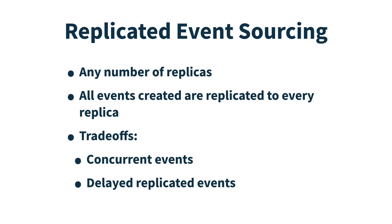This is the trade-off we make when using event source behaviors with cluster sharding. When failure cases happen — crashes or network partitions — it takes some time to move those entities and guarantee we don't have multiple instances running. Replicated event sourcing makes the opposite trade-off: we remove the single writer principle and develop our business logic assuming that events can happen concurrently. The machinery of replicated event sourcing handles the replication between various replicas, and if we store an event on one replica it will be replicated to all other replicas. Of course there could be a network partition causing delayed replication, so we need to handle concurrent events.